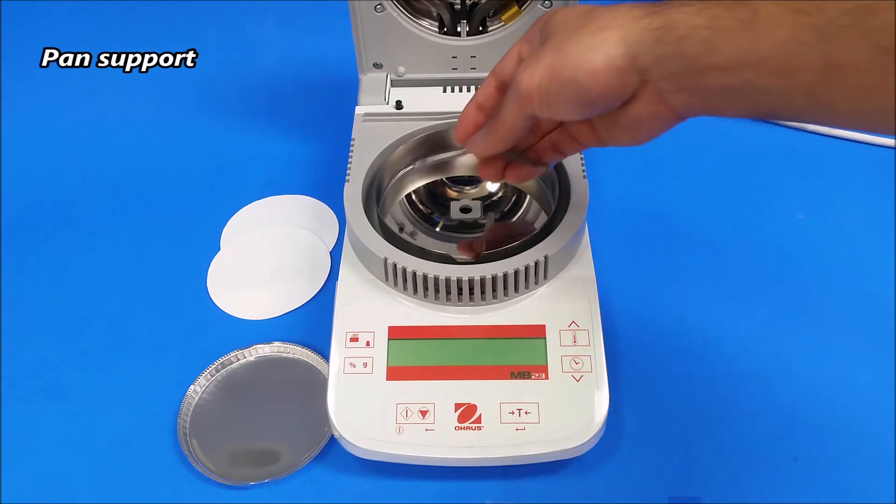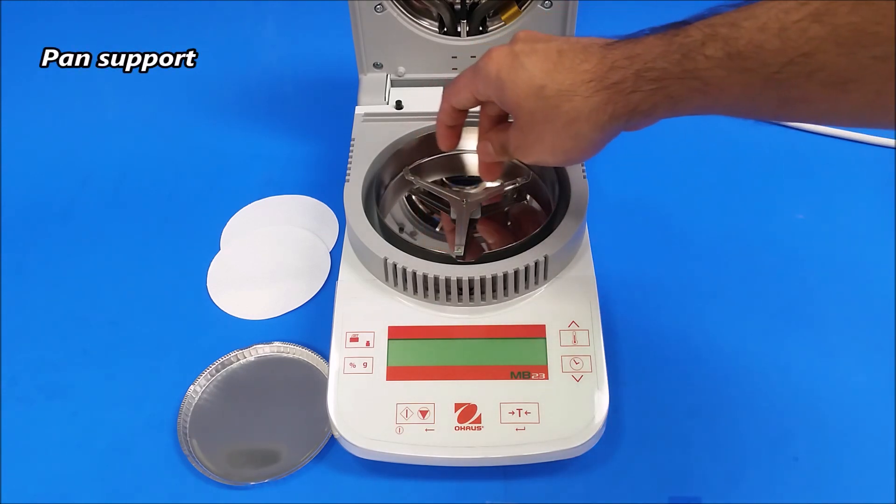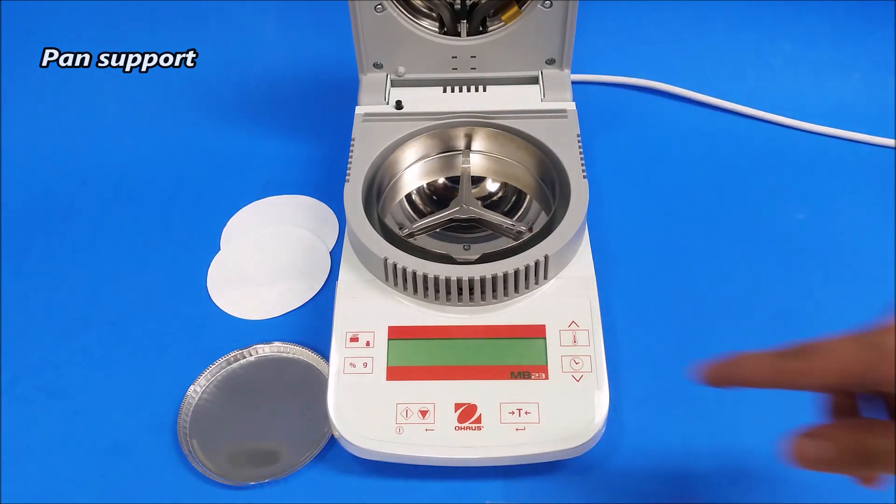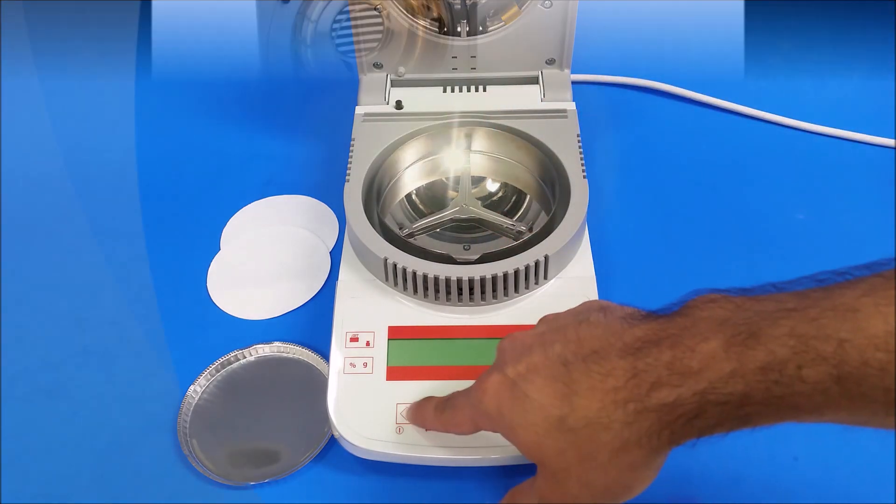Next will be the pan support. It should fall into place like that, and then we turn on our unit.